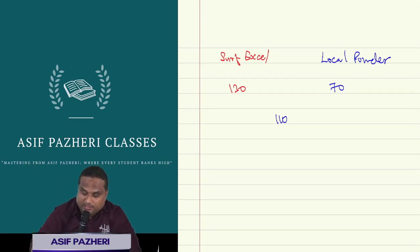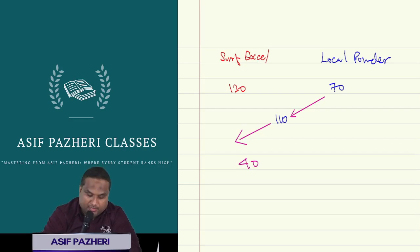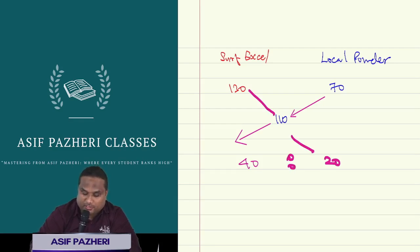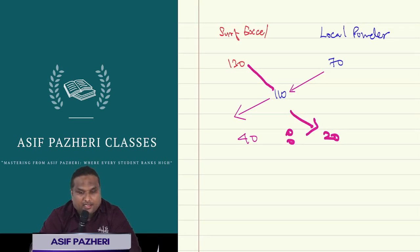Now look at the board. The technique is: 70 minus 110 equals 40. And 130 minus 110 equals 20. So the ratio is 40 to 20.